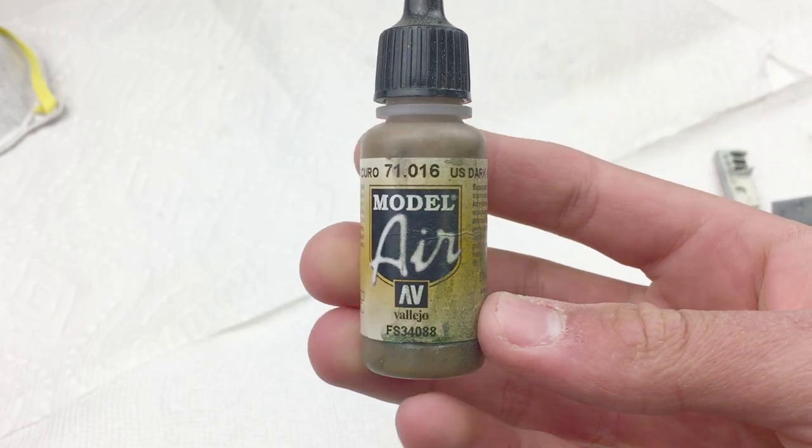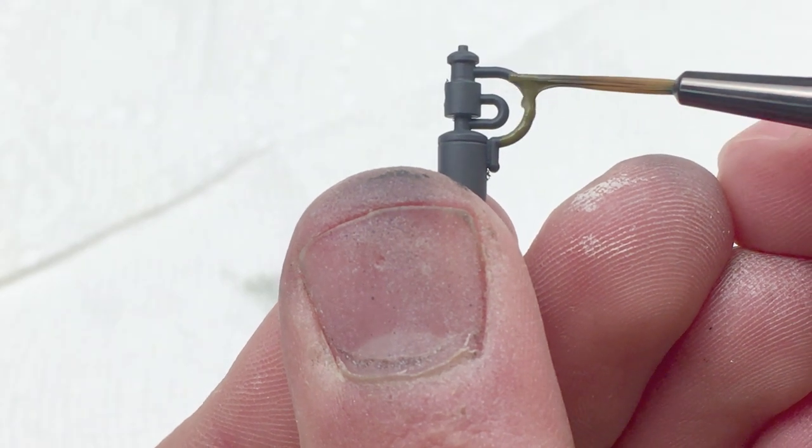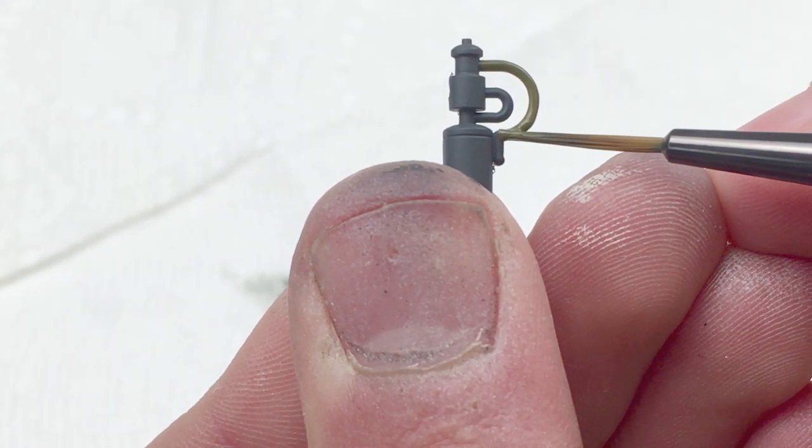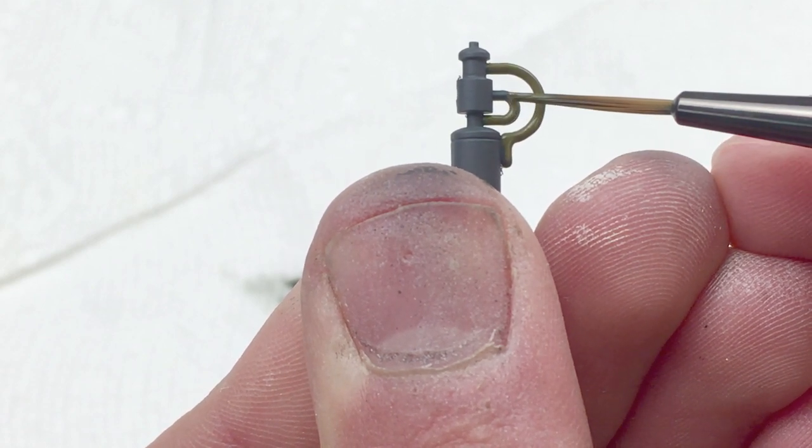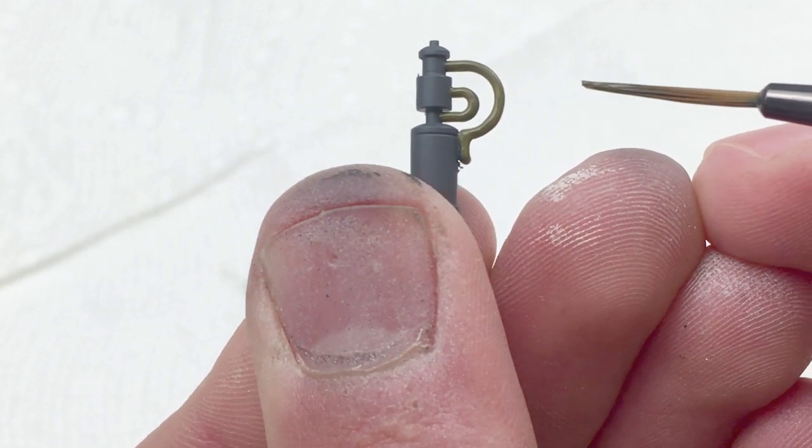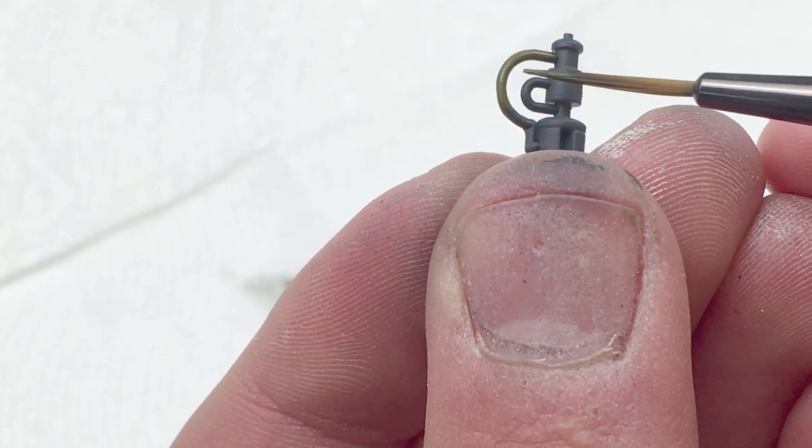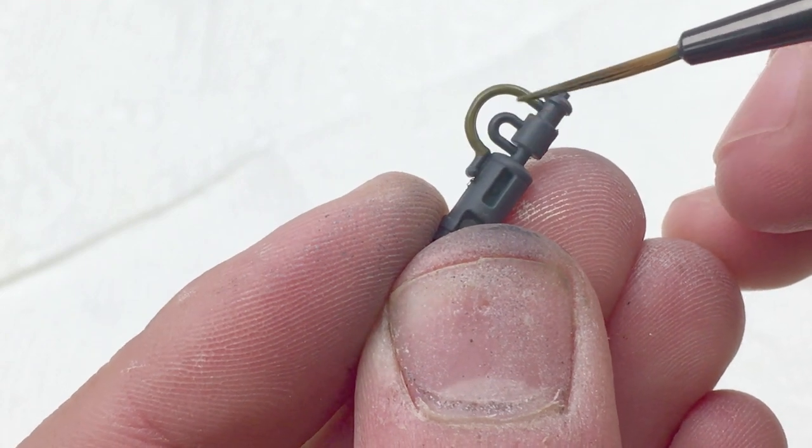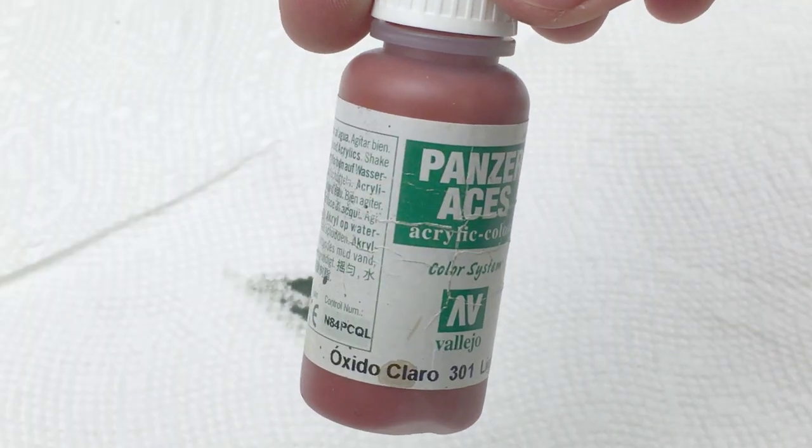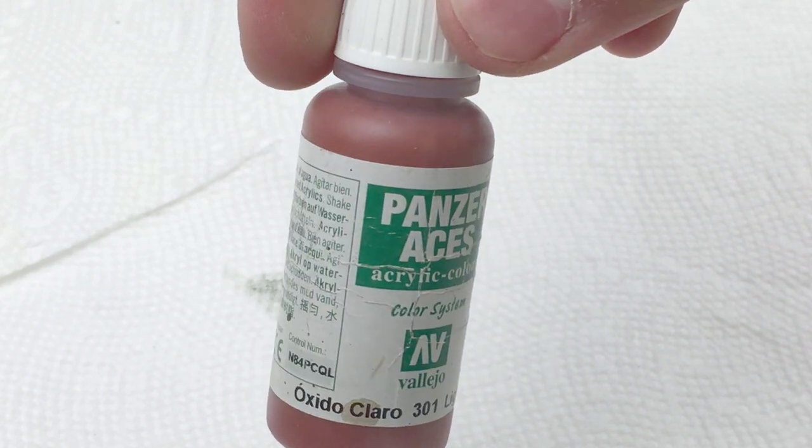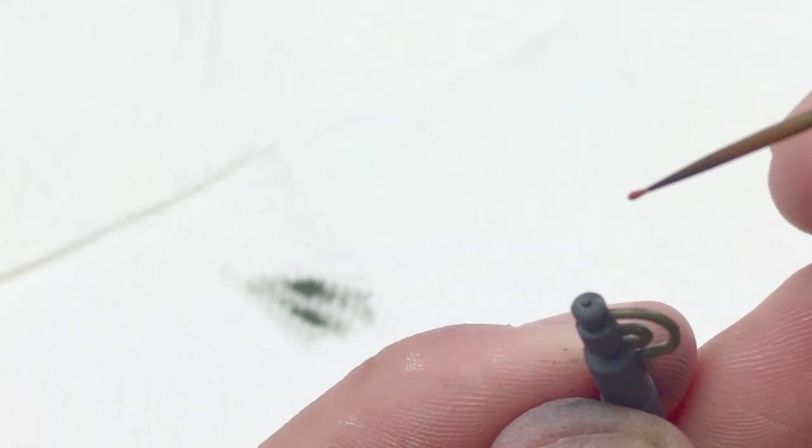I then used Vallejo US Dark Green and Vallejo Chocolate Brown for leather and wood details. And then, since I don't have red, I used Vallejo Light Rust for this button or cap on the fire extinguisher.